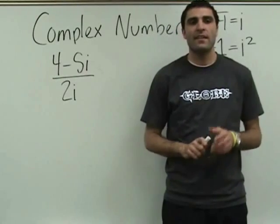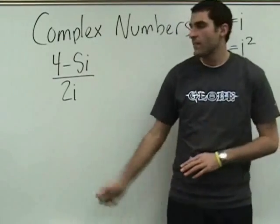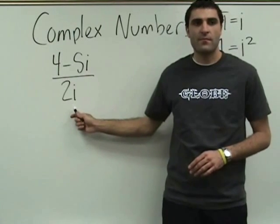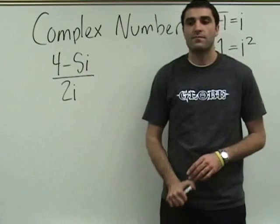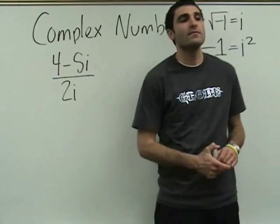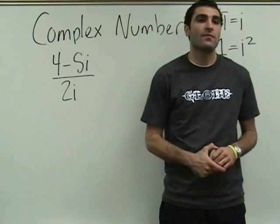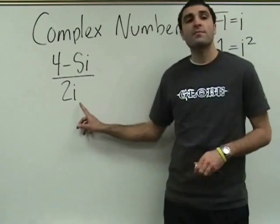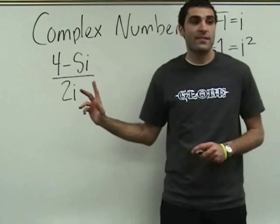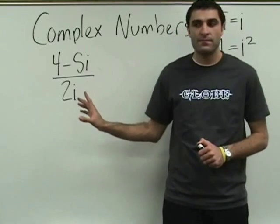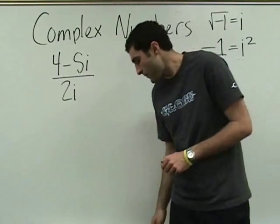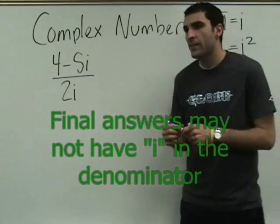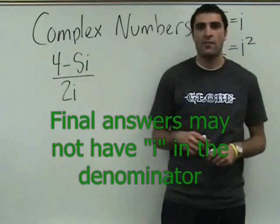Much in the same way that square roots operate, we can't leave i's on the bottom either. We can multiply top and bottom by 2i, or negative 2i, or we could multiply top and bottom by i, because that will get rid of the i on the bottom. So let's multiply top and bottom by i. The final answer can't have any i on the bottom.